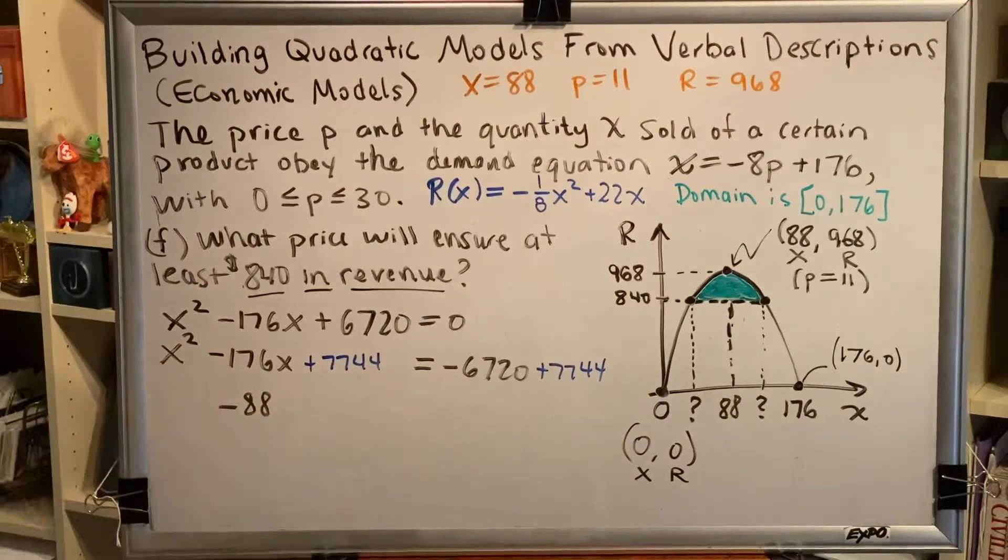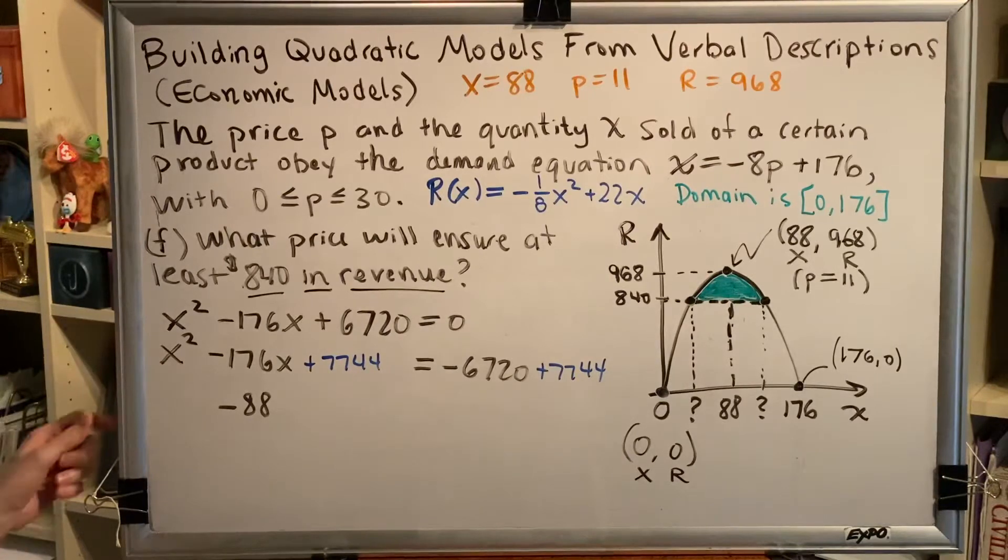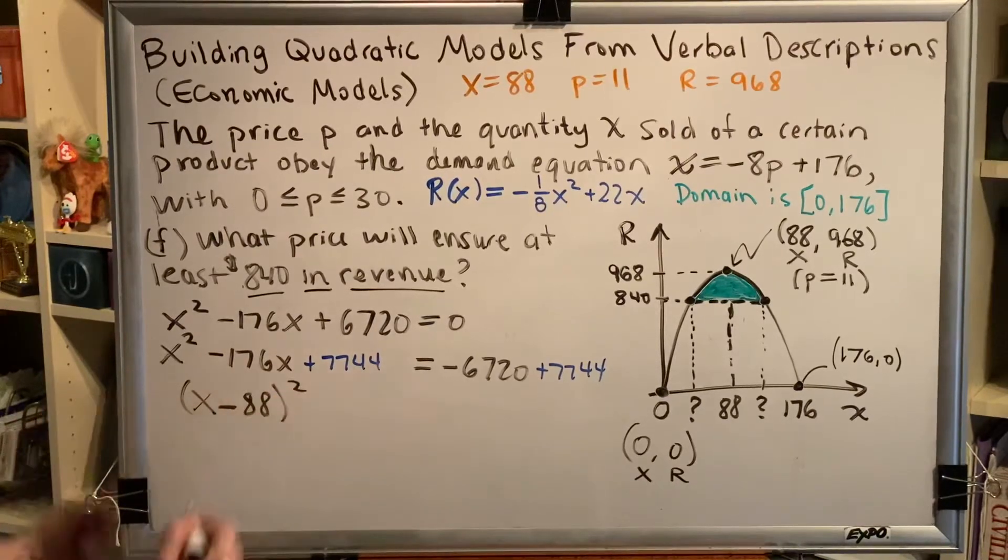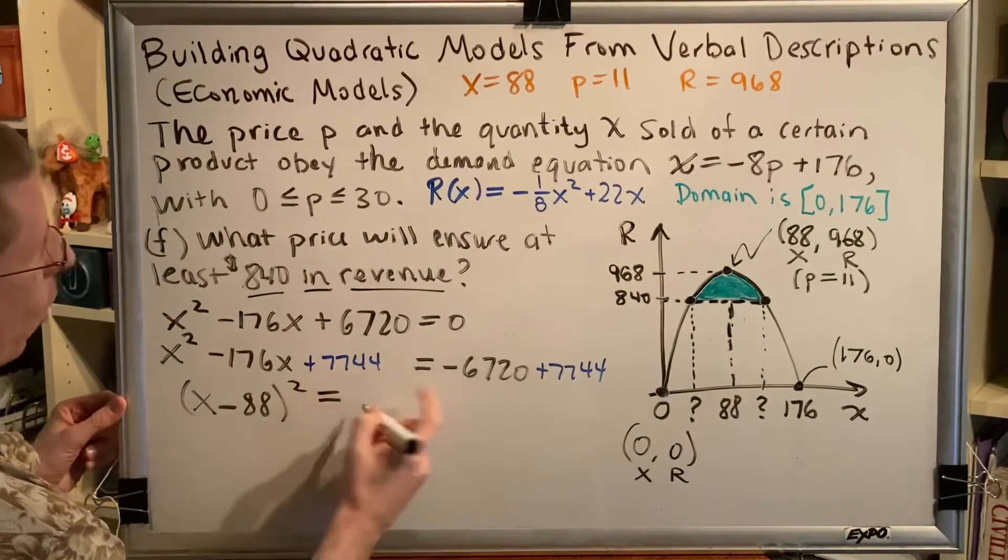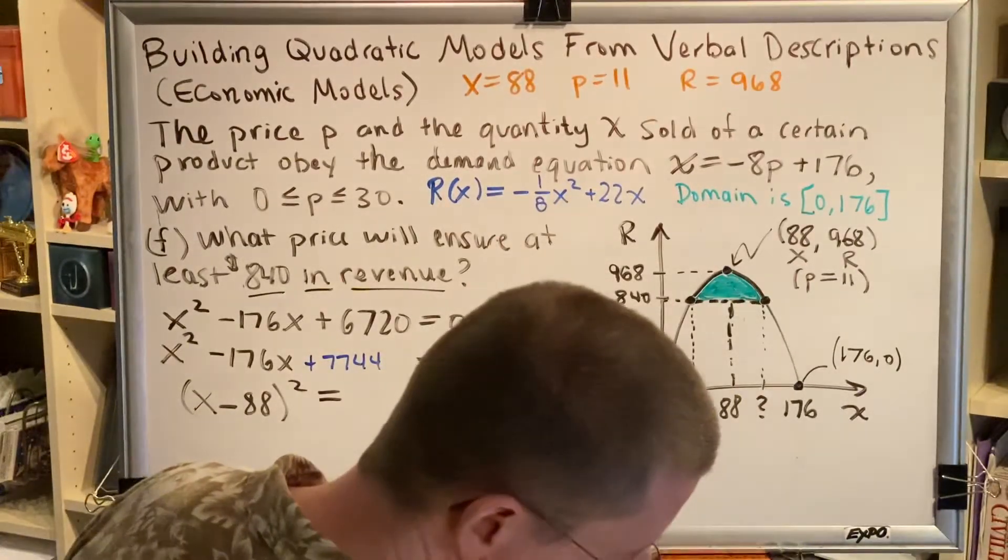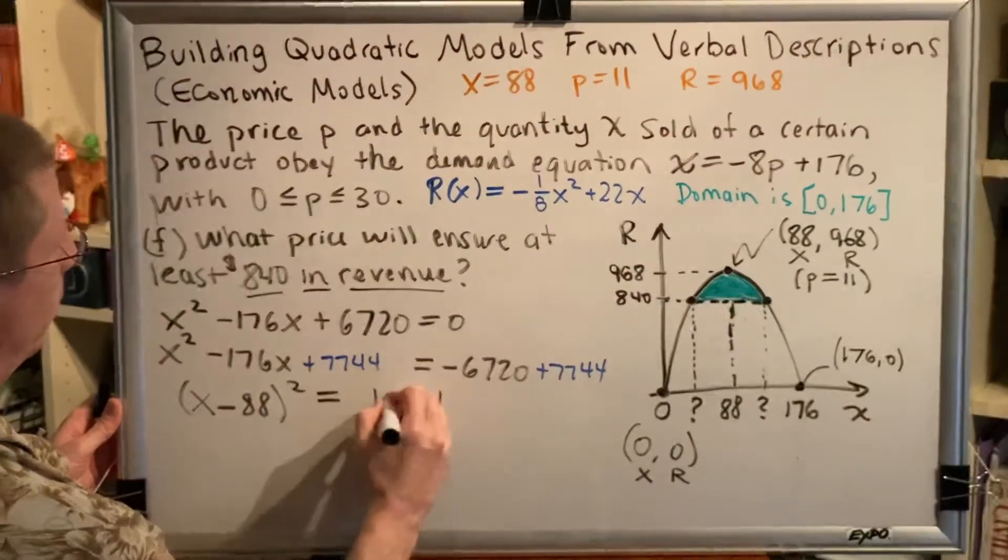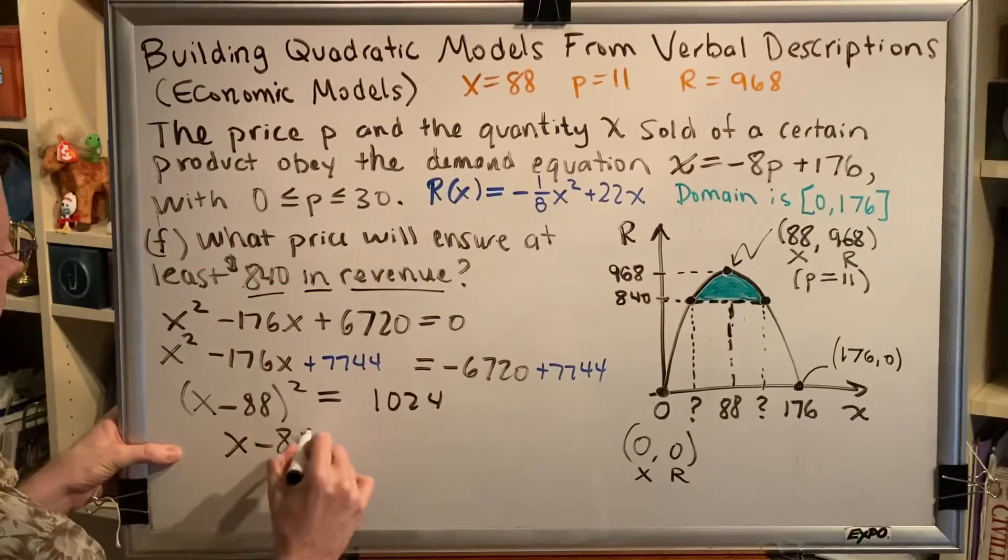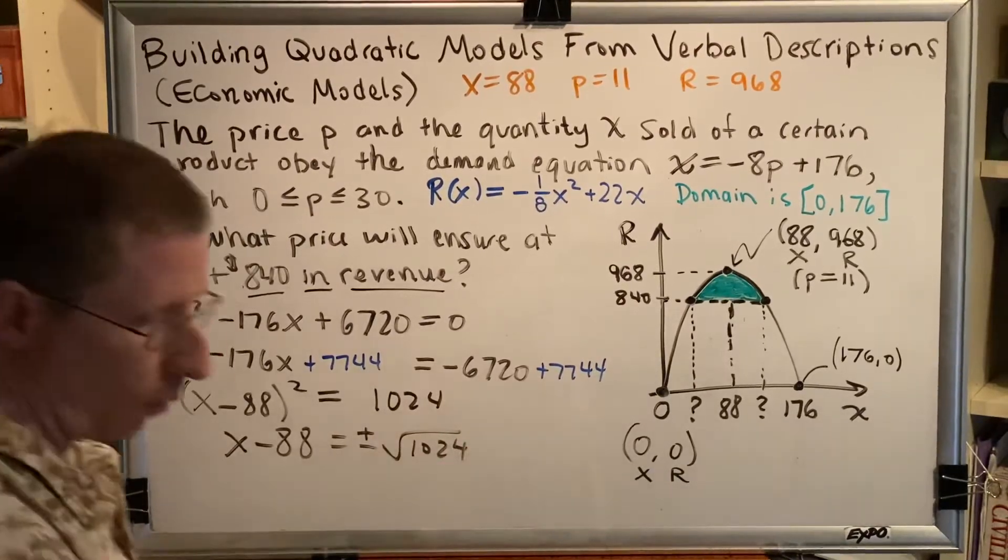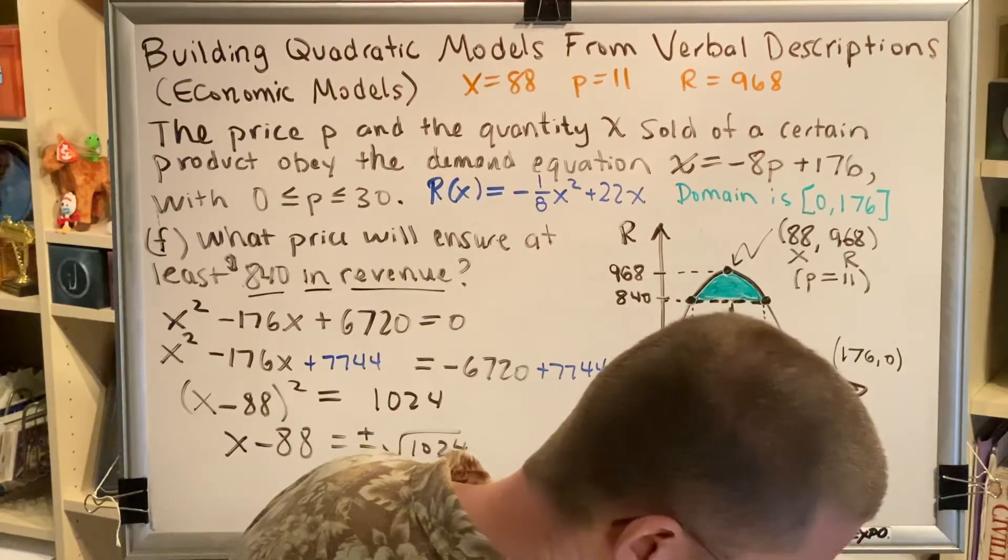Next, factor this trinomial. And you might think, well, that's just about as hard as the one we were dealing with before. But it isn't, because it's completing the square. All we have to do is put an x in front of this, put the whole thing in parentheses, and then square it. Over here on the other side, we'll combine these two numbers. So 7744 - 6720 leaves 1024. Now use the square root property from intermediate algebra. x - 88 = ±√1024. Turns out the square root of 1024 is a nice number. It's 32.